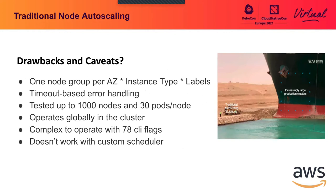There are some challenges with this approach. Cluster auto-scaler assumes that instance types are all identical in a given group. If you want to use multiple instance types, you need to create separate groups. Furthermore, if you need to spread pods across availability zones, you multiply the number of groups by each AZ. Additionally, if there is an error creating a node in a node group, cluster auto-scaler will not know until it times out, causing delays when a pod stays pending.